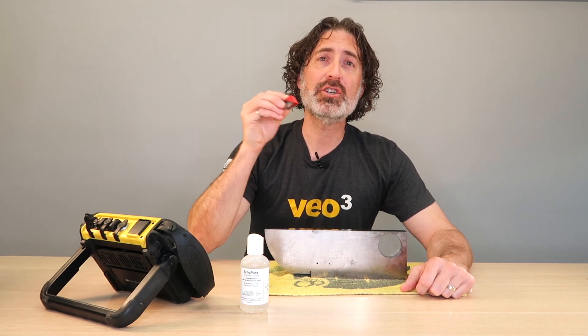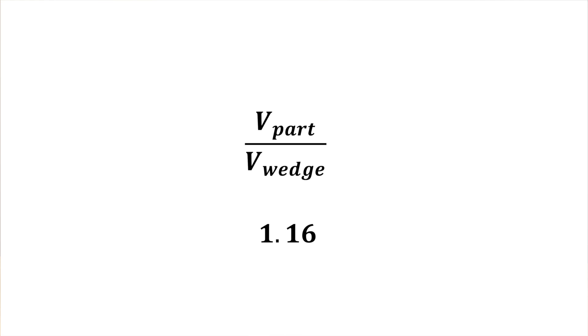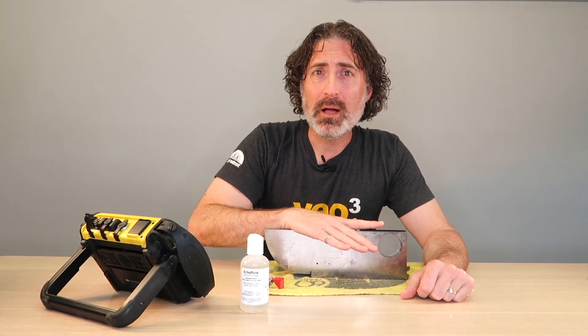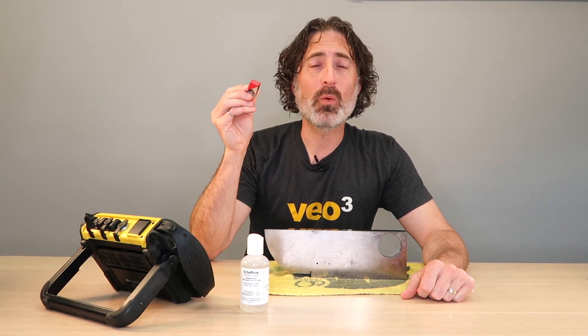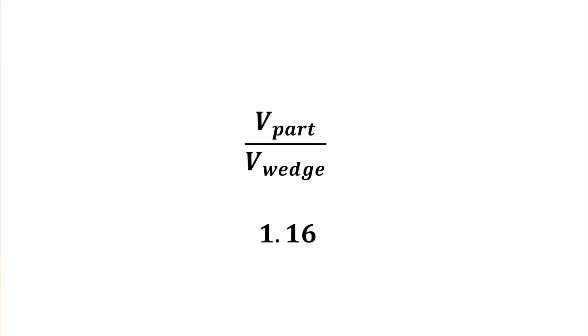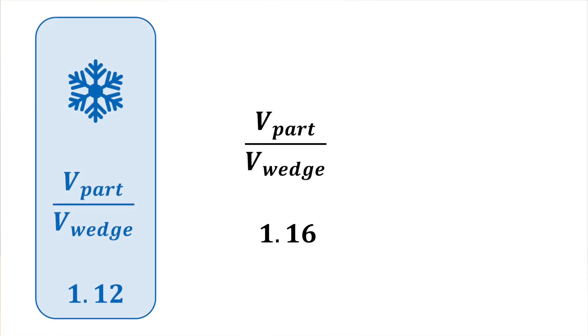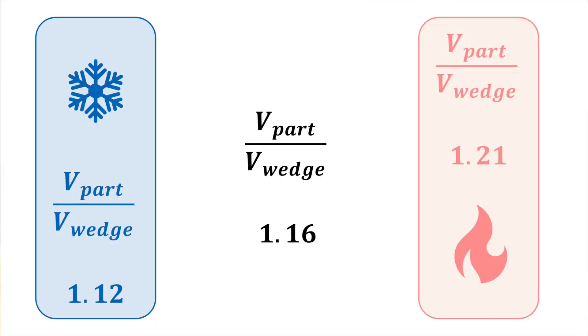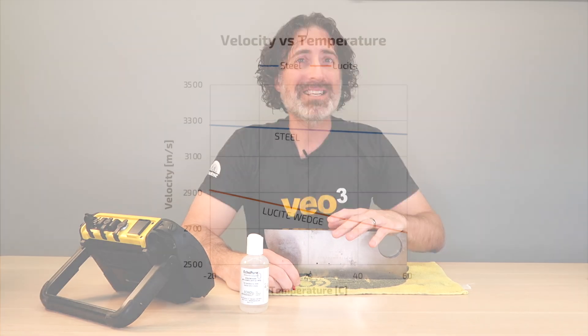At room temperature, the ratio between the longitudinal wave velocity in lucite and the shear wave velocity in steel is about 1.16. When the temperature goes down, the velocity of sound in steel goes up a little bit, but it goes up a lot more in the wedge. Since the wedge velocity is on the bottom of the fraction, that ratio value goes down — at minus 20, it ends up being about 1.12. On the other side, when we turn the heat way up to 60 degrees Celsius, velocity goes down a little in steel but a lot more in the wedge, so our ratio is 1.21.